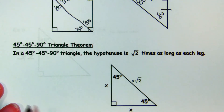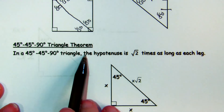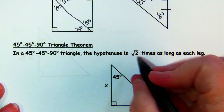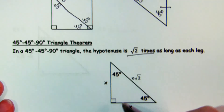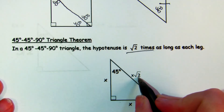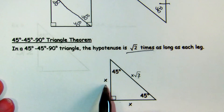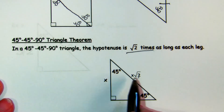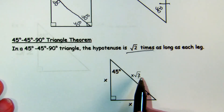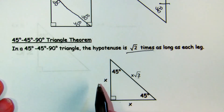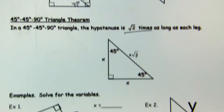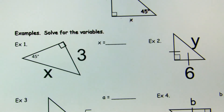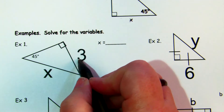In a 45-45-90 triangle, the hypotenuse is √2 times as long as each leg. So the legs are both x — they're the same — and the hypotenuse is x times √2. If you know the legs, you multiply by √2 to find the hypotenuse, and that's all it is. Now we're going to do some examples.